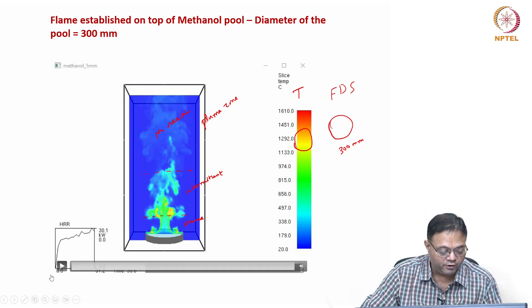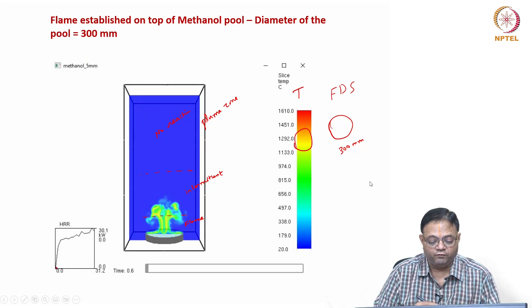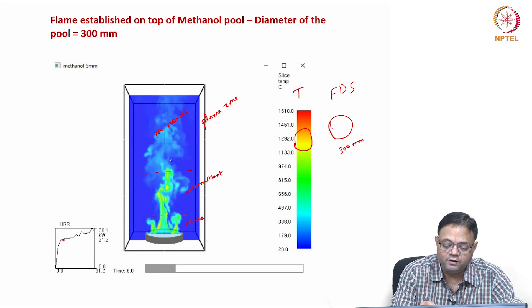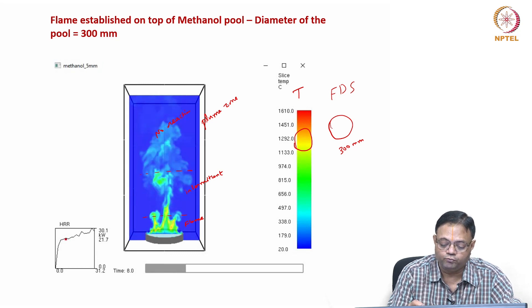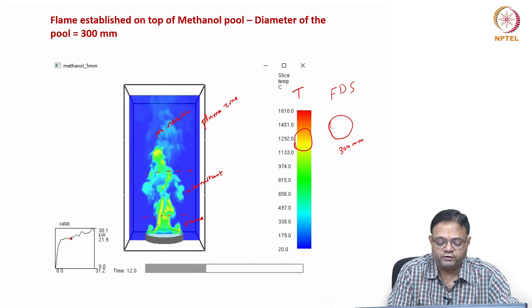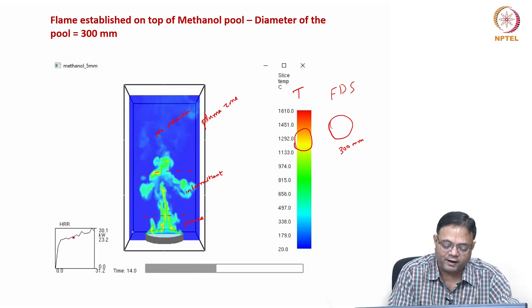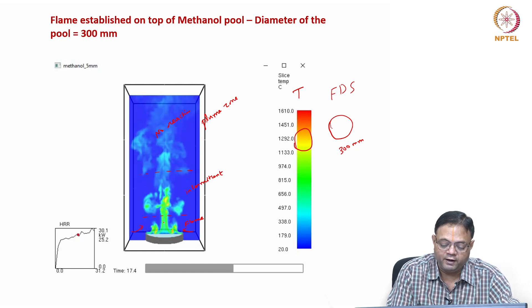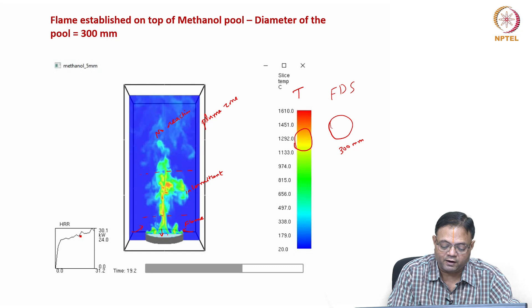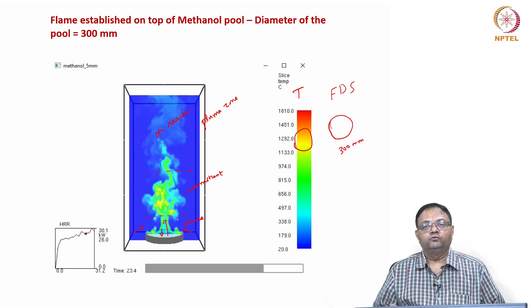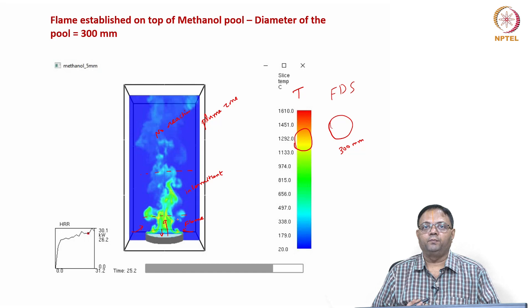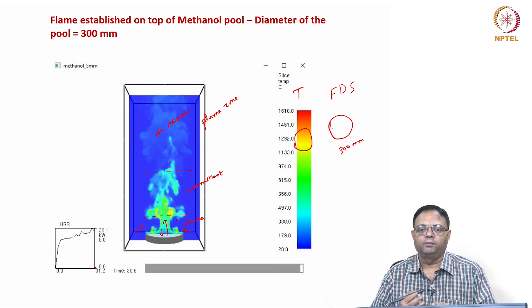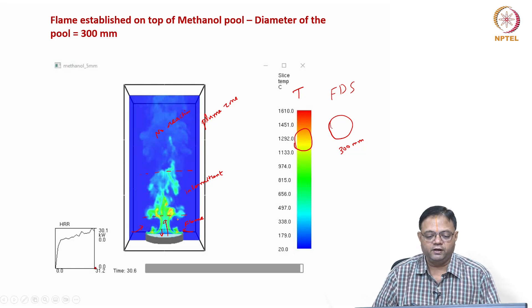These fluctuations are again caused by air entrainment — air from the ambient entrains, heat from the flame is fed back, vapors are generated and they go to the flame. Since the diameter is 300 mm (30 cm), it is in the transitional regime of burning with some turbulence induced as well. This concludes the second case study.